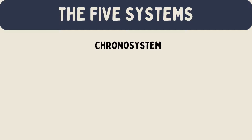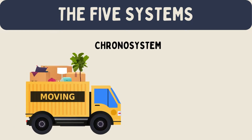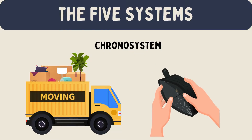The chronosystem involves changes over time. This can include big events like moving to a new city, or smaller changes like growing older. These changes can affect all the other systems. For example, a family's financial situation may change, which can impact the child's development.